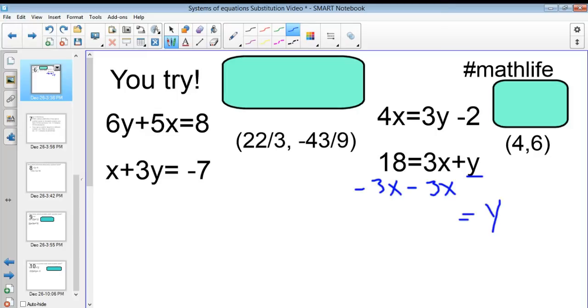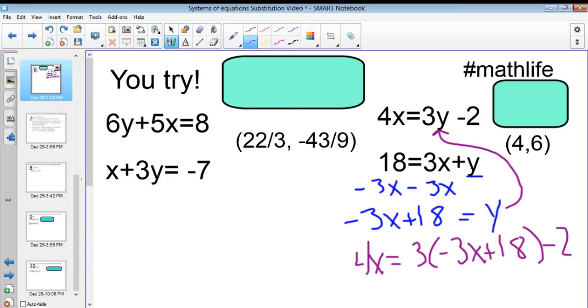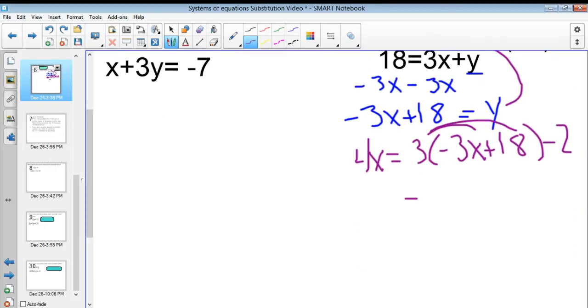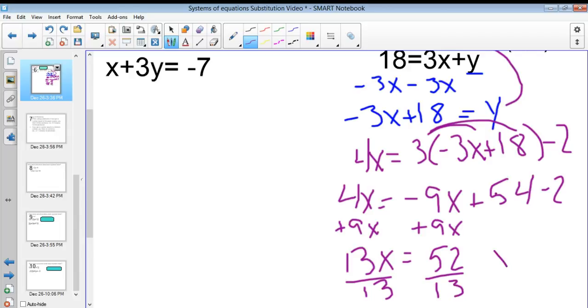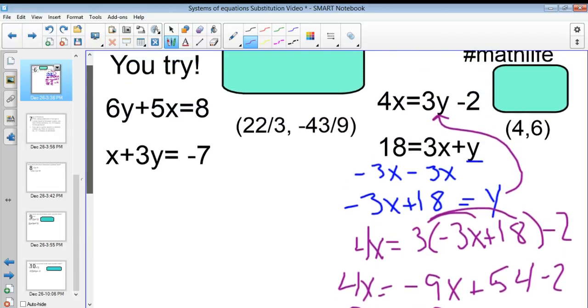And now, I have y equals negative 3x plus 18. From there, again, I'm not going to be a scrub. I'm going to plug this into the other equation. And I'm going to get 4x equals 3 times negative 3x plus 18 minus 2. I distribute the 3. And I get negative 9x plus... What is that? Wait for it. That would be 54. Okay, I almost said 44. Minus 2 equals 4x. And then I add 9x to both sides. And I get 13x equals 52. And I divide both sides by 13, which gives me x equals 4. Perfect.